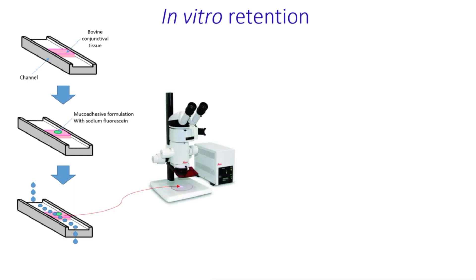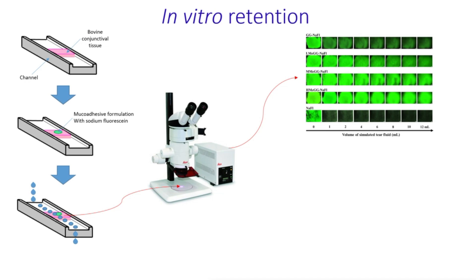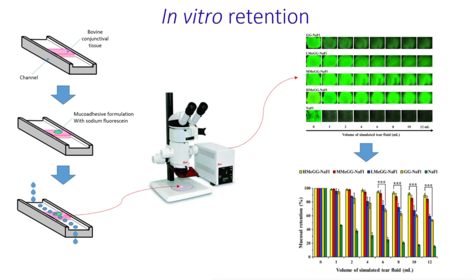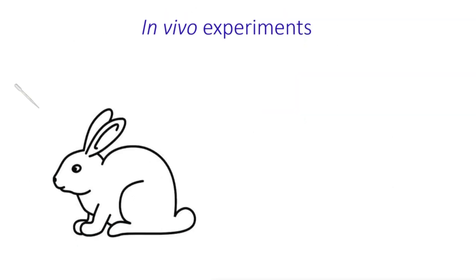Images were taken after each wash with one milliliter of artificial tear fluid using a fluorescent microscope. These images were analyzed with image analysis software and converted into numerical values. Our data indicate that methacrylated gellan gum showed statistically significant improvement in retention of fluorescent dye on the ocular mucosa. In vivo experiments were conducted in laboratory rabbits.